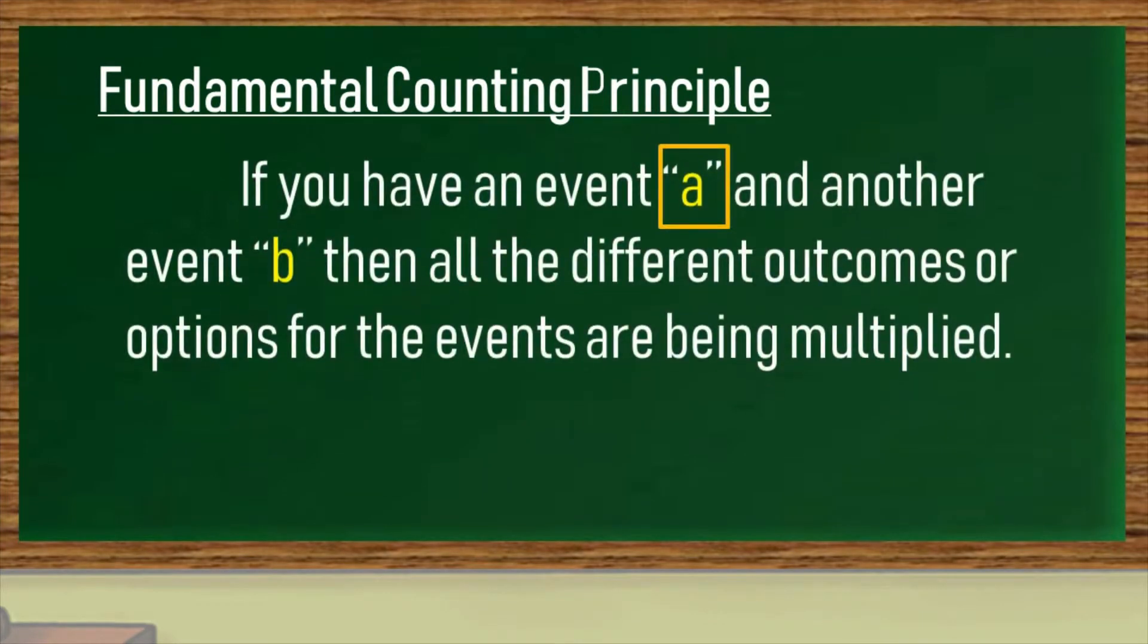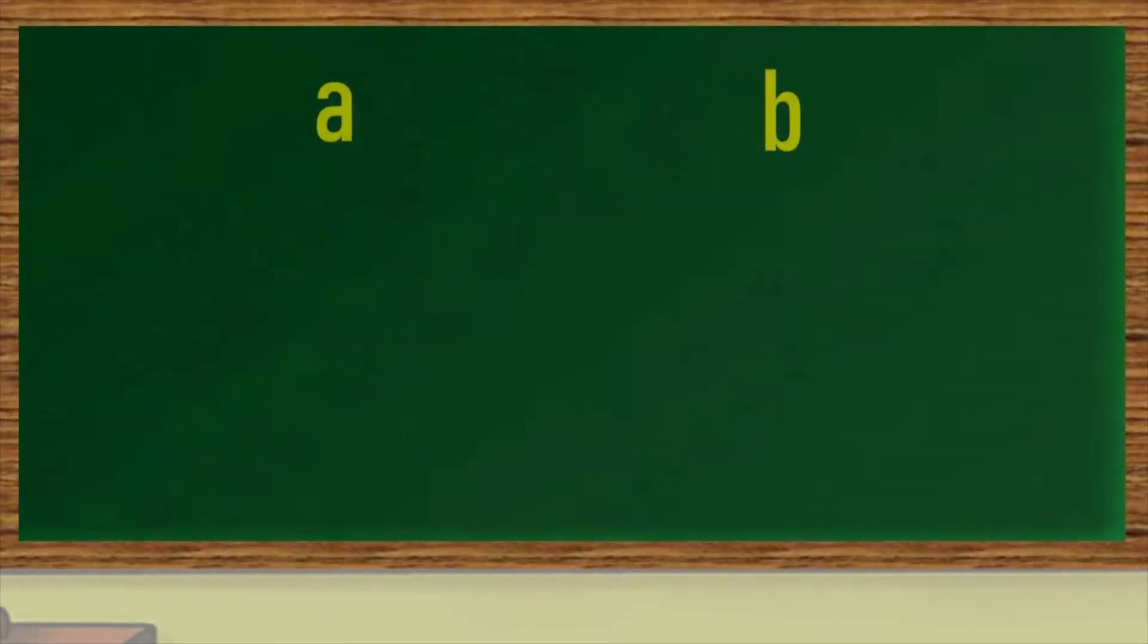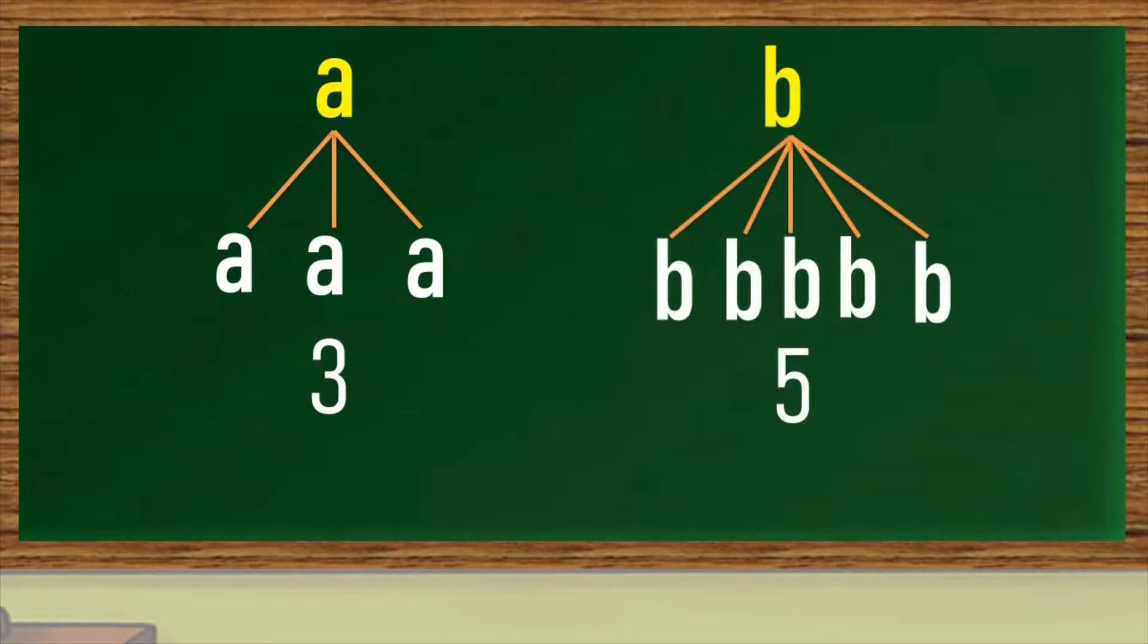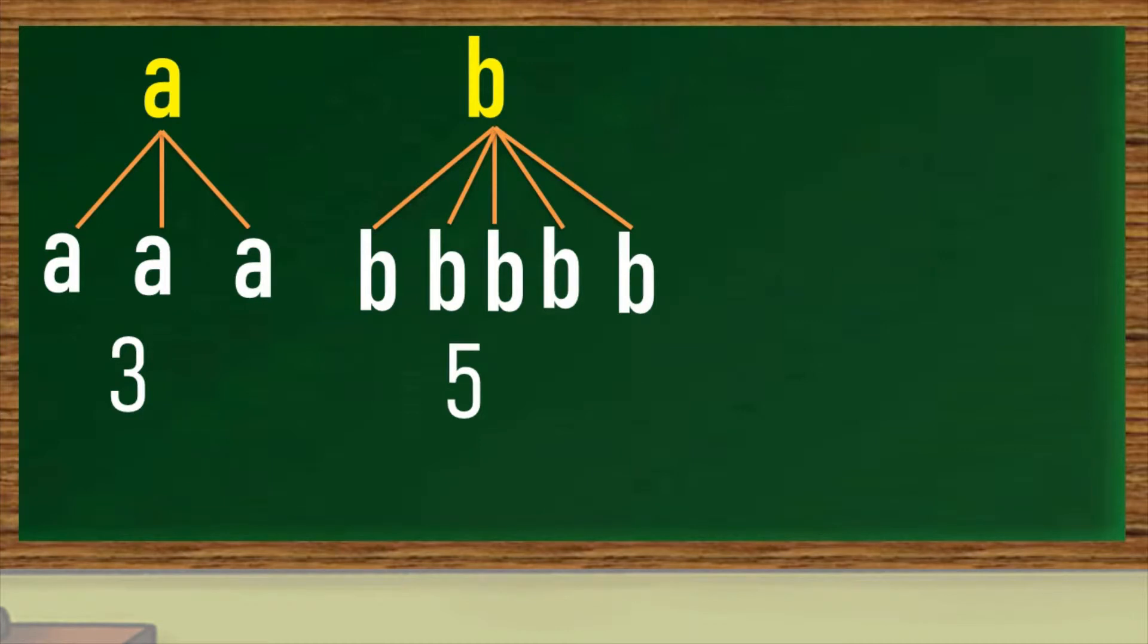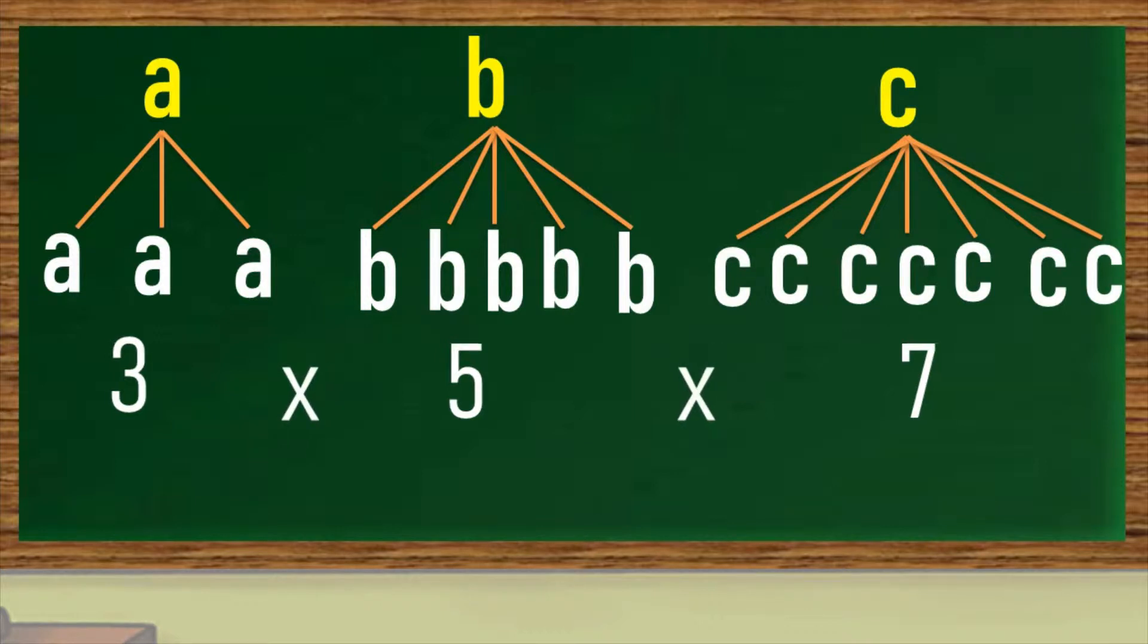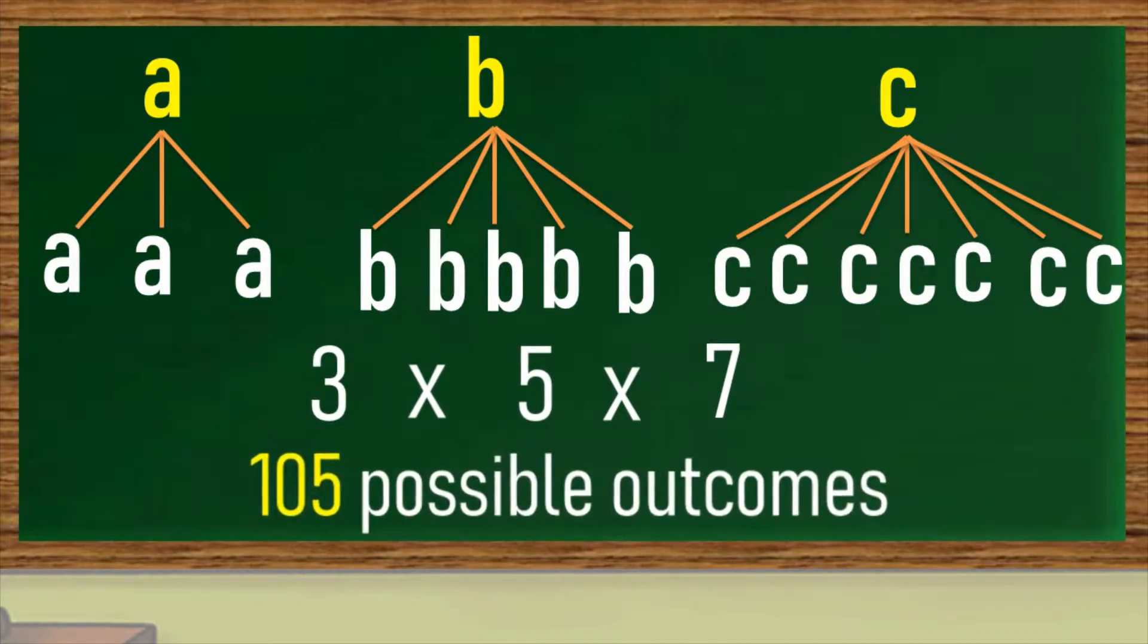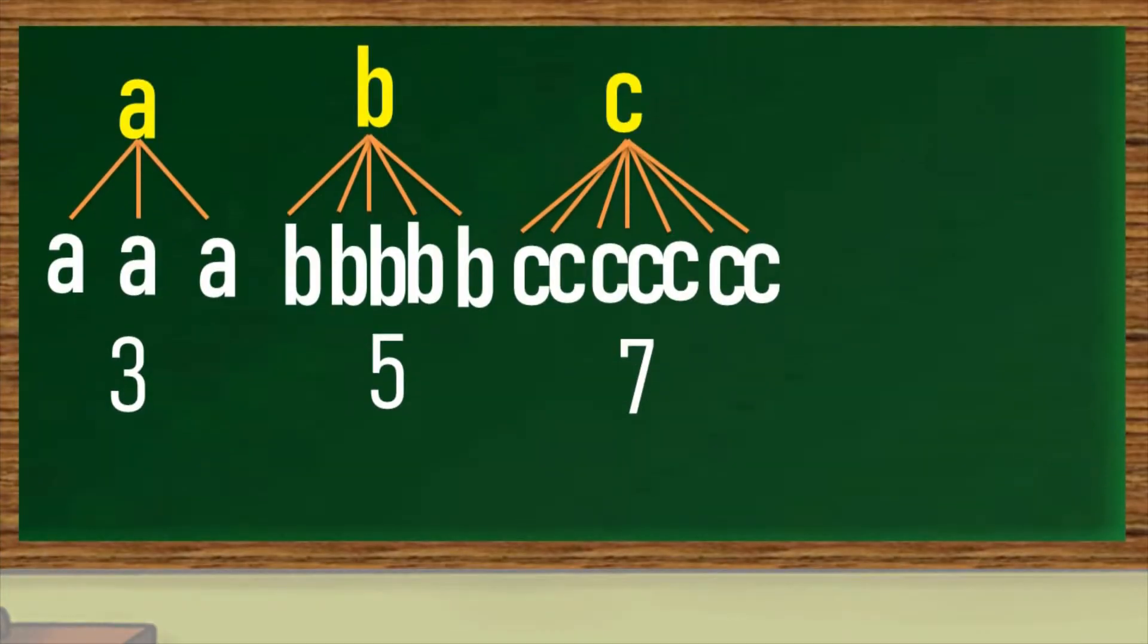If you have an event A and another event B, then all the different outcomes or options for the events are being multiplied. In a simple illustration, if you have an event or variable A which has options of 3, and another event B which has 5 options, multiply the total options for each event to get 15 as total possible outcomes. In case that you have another event C and it has 7 options, multiply it to the product of A and B to get 105 possible outcomes. And apply the same process if you have more events to include.